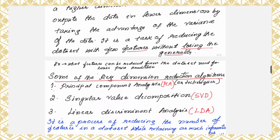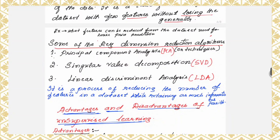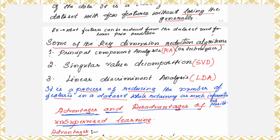In simpler words, dimension reduction is a process of reducing the number of features in a dataset while retaining as much information as possible. For example, if your dataset has 20 features but the algorithm only needs 10 features, then the remaining 10 features can be removed — meaning the 20 features are reduced to 10 features.